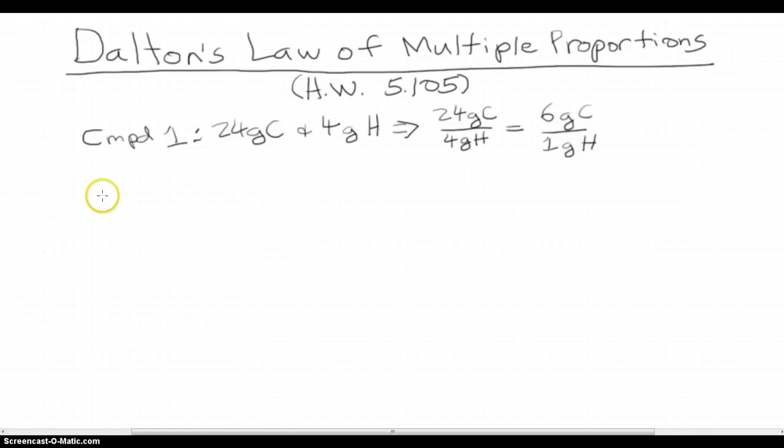Now, let's say we have another compound, compound two. It also is comprised of just carbon and hydrogen. And in this second compound, we have 36 grams of carbon and 8 grams of hydrogen. When we take this ratio, compound two, we get 4.5 grams of carbon per every one gram of hydrogen.